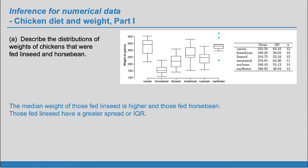Also those fed linseed have a greater spread or IQR. We can see that this box here from Q1 to Q3 is wider than this one. Also both weight distributions are approximately symmetric.